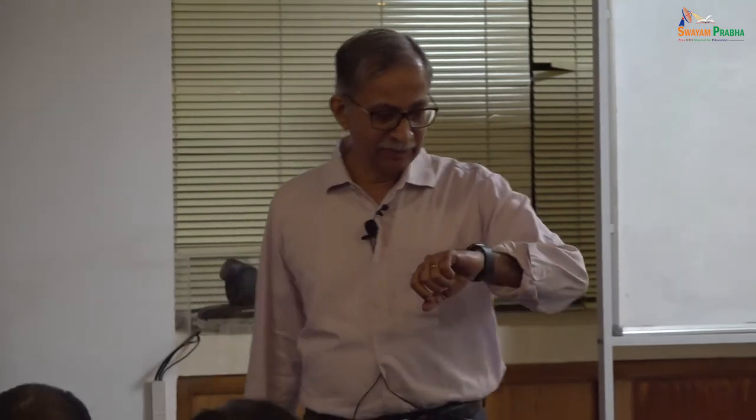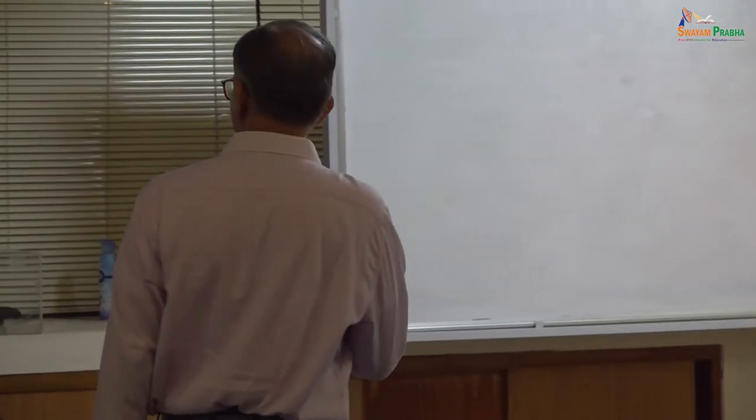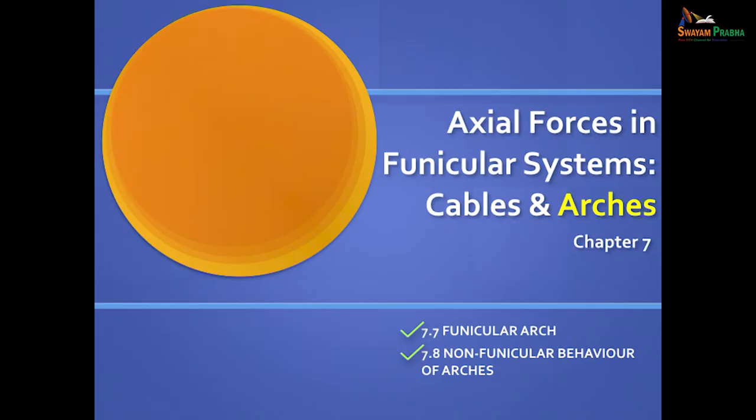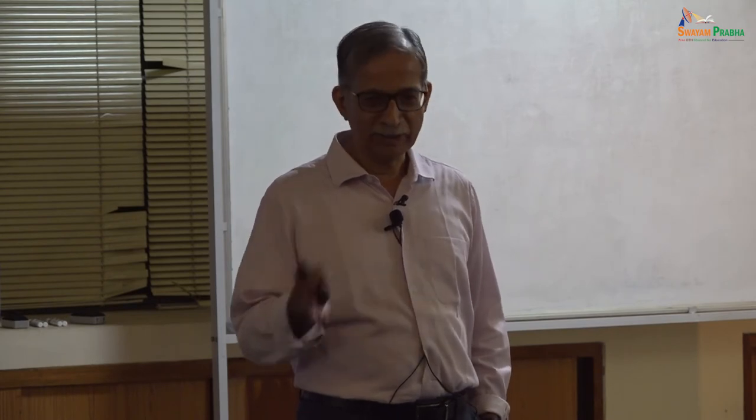So in summary, this is second-order calculation accounting for three things: one, cables are not infinitely stiff — there is elastic stretch; two, temperatures can affect the sag and tension in the cable; three, supports can also slip. That's it — we finished cables. Now we have one more topic in this chapter on funicular systems: we'll now look at arches. We look at two types: funicular arch and non-funicular arch. The bending moment will be zero in a funicular arch for some loading at every location.